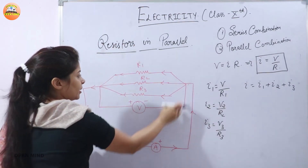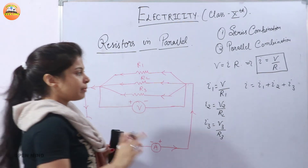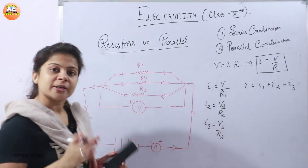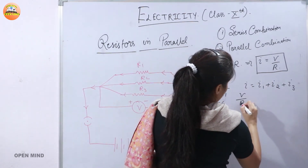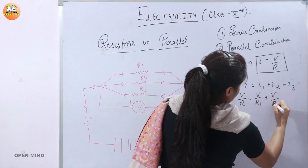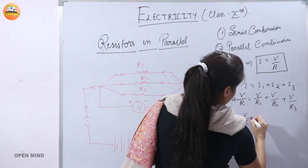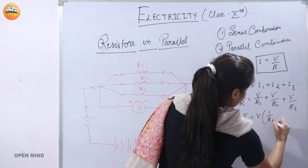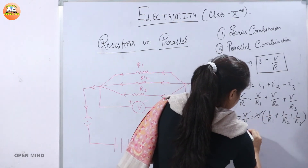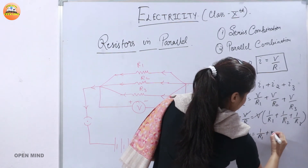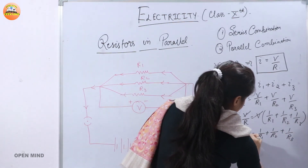Substituting into I = I1 + I2 + I3: V/R = V/R1 + V/R2 + V/R3. Taking V as common on the right side: V/R = V·(1/R1 + 1/R2 + 1/R3). Cancelling V from both sides gives: 1/R = 1/R1 + 1/R2 + 1/R3. This is the final derivation for resistors in parallel.